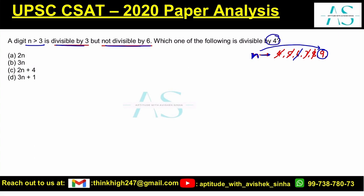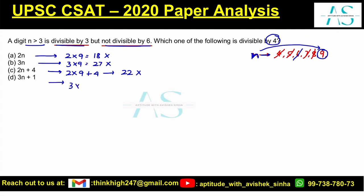2n means 2 into 9 which is 18 — not divisible by 4. 3n is 3 into 9 which is 27 — again not divisible. Then 2 into 9 plus 4 is 18 plus 4 = 22 — not divisible. Last one: 3 into 9 plus 1 is 27 plus 1 = 28. 28 is divisible by 4.